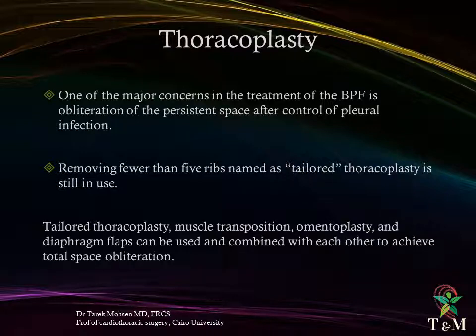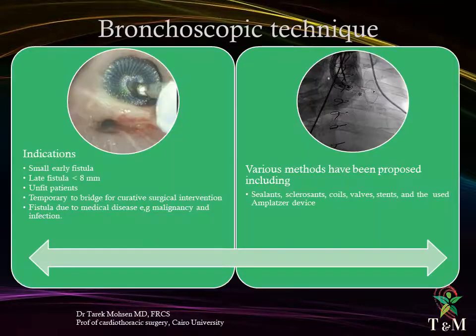Classic 11-rib resection for thoracoplasty is no longer performed; tailored thoracoplasty is used instead. One of the major concerns in treating bronchopleural fistula is obliteration of the persistent space after control of pleural infection. Fewer than five ribs are resected, and the residual cavity is packed with muscle transposition, omentoplasty, and diaphragm flaps, achieving total space obliteration.